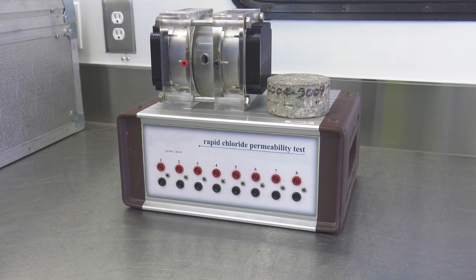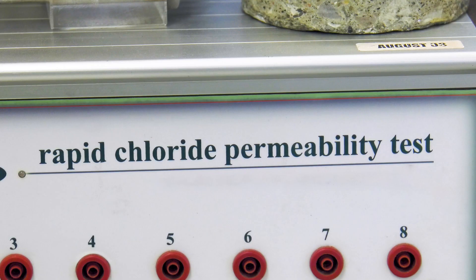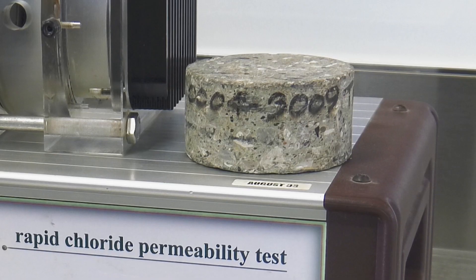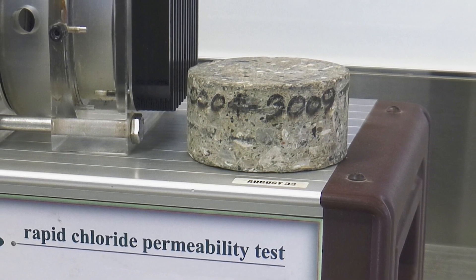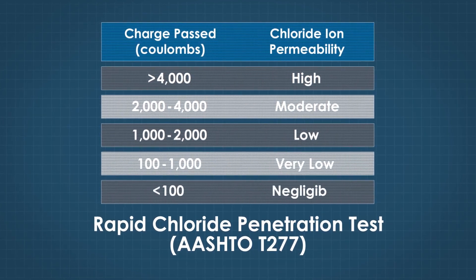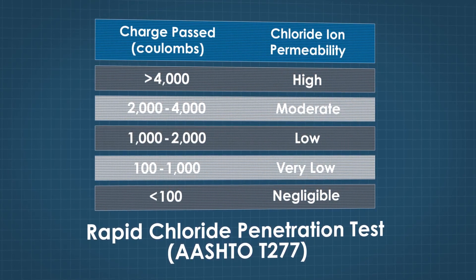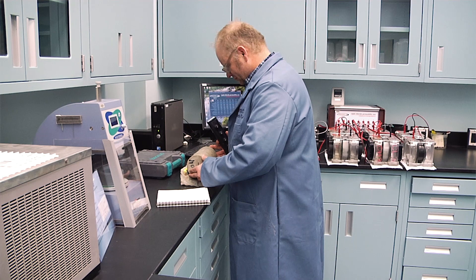The rapid chloride permeability test measures the total charge passed by a specified voltage in six hours across a concrete specimen placed between sodium hydroxide and sodium chloride solutions of specified concentrations. The test measures the conductivity of the saturated concrete, including the effects of all dissolved ions. The result in Coulombs is used to make a general assessment of the chloride ion penetrability based on a qualitative rating.